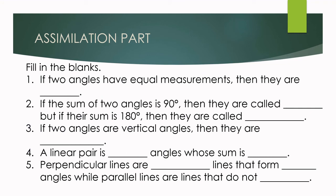It's time for you to answer the assimilation part. You're going to fill in the blanks. Number one: if two angles have equal measurements, then they are blank. Number two: if the sum of two angles is 90 degrees, then they are called blank. Number three: if two angles are vertical angles, then they are blank. Number four: a linear pair is blank angles whose sum is blank. Number five: perpendicular lines are blank lines that form blank angles, while parallel lines are lines that do not blank. Write your answer on your paper.